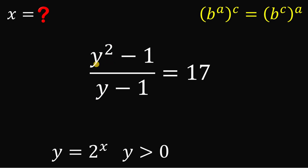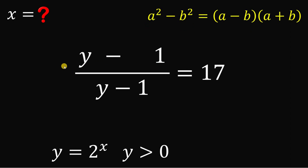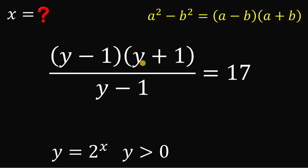On the numerator we now have y squared minus 1, which is a difference of two squares since 1 can be written as 1 squared. Using the difference of two squares — a squared minus b squared equals a minus b times a plus b — the numerator factors as y minus 1 multiplied by y plus 1.